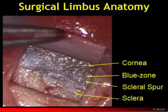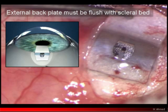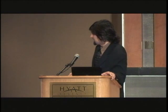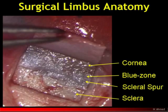We want this device just anterior to the anterior aspect of the spur, making sure it's at iris plane and avoiding contact with the cornea. The back plate also needs to be flush with the scleral bed to prevent erosion — which is a non-issue if done correctly. Let's remember our anatomy in terms of the external limbal area: the sclera, the randomly organized fibers, the scleral spur as a white glistening band, and the blue zone transitioning to clear cornea.